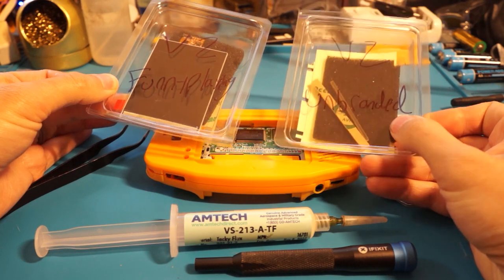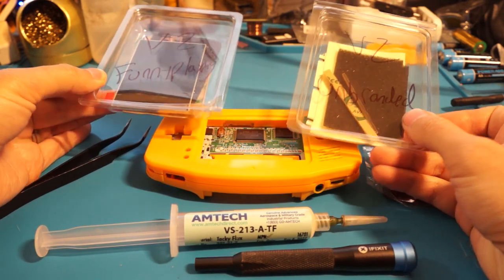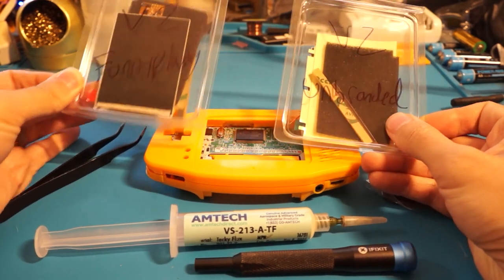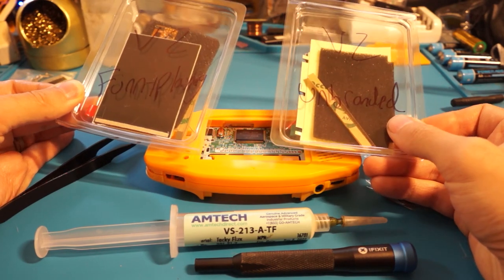In this 2 for 1 video we're going to show you how to install both the funny playing and unbranded V2 IPS kits for the AGB model Gameboy Advanced.